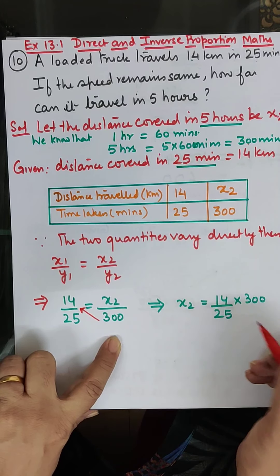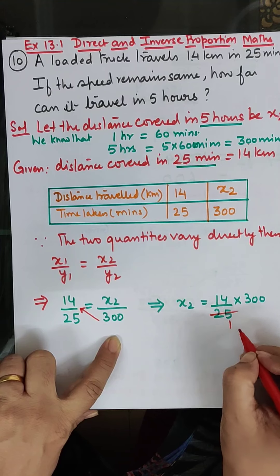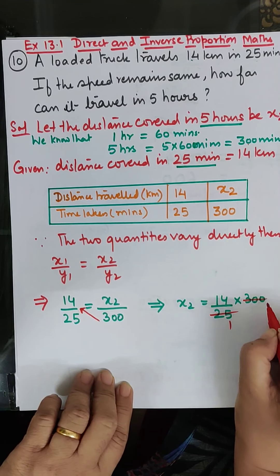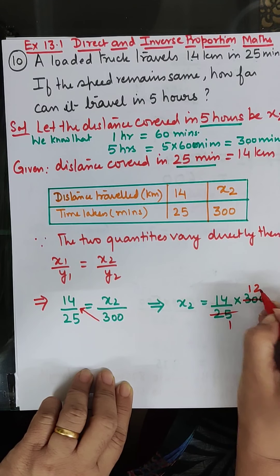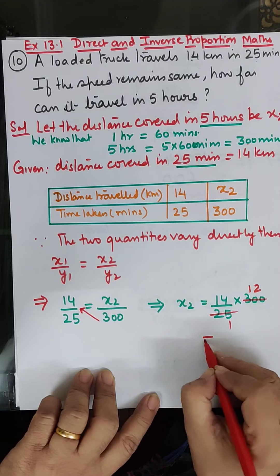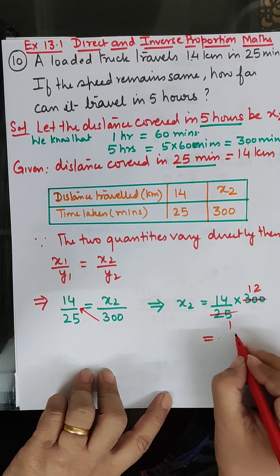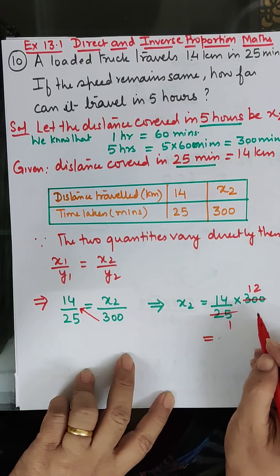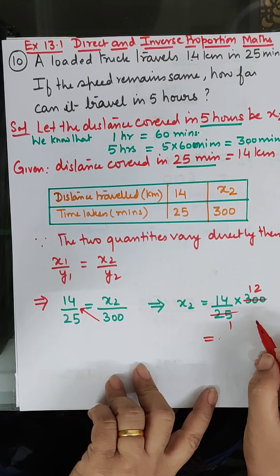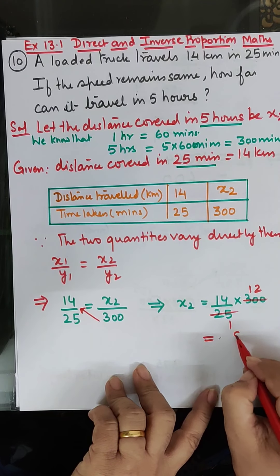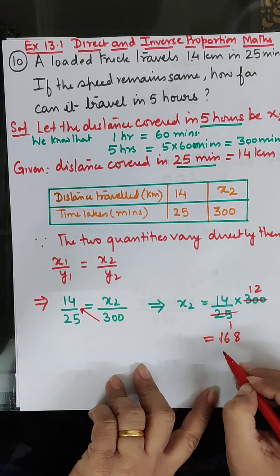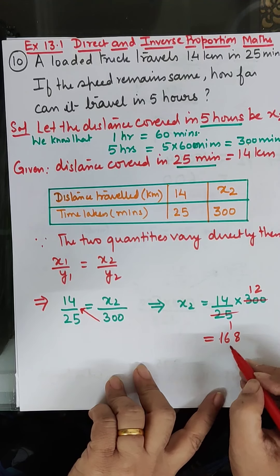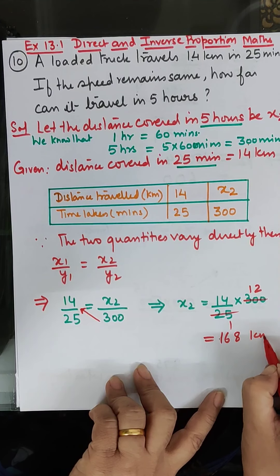Now let me solve this. 25 into 1 is 25, 5 remainder 0. 25 into 2 is 50. Now multiply. 14 into 12. 14 times 12: 2 times 4 is 8, carry 4; 12 plus 4 is 16. So this is 168 kilometers.